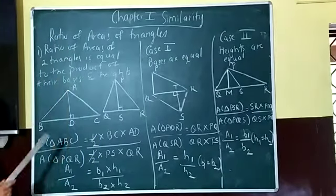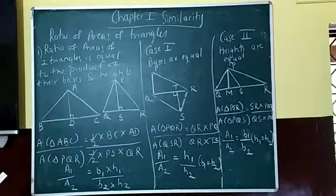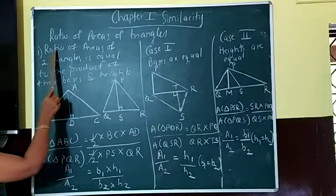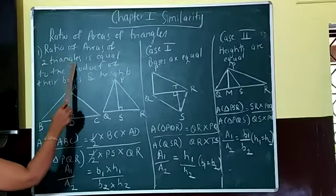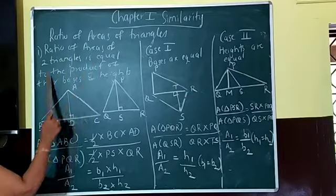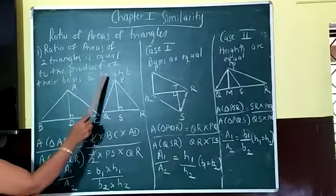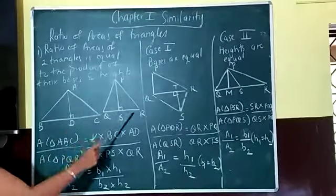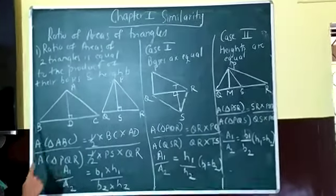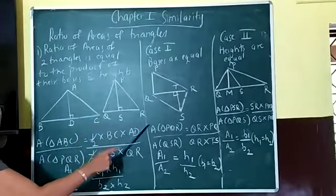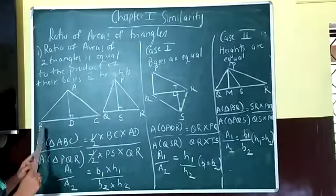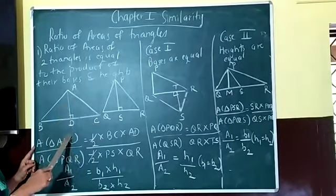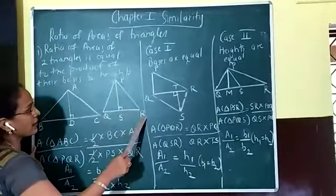Ratio means division, and we are going to see how this property relates the bases and heights of two triangles. The first property states: ratio of areas of two triangles is equal to the product of their bases and heights. We have two triangles here, ABC and PQR. In the first triangle, BC is the base and AA is the height. In the second triangle, QR is the base and BS is the height.